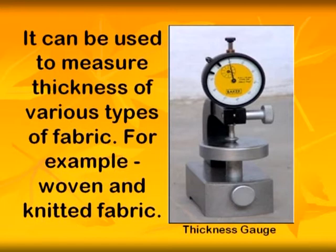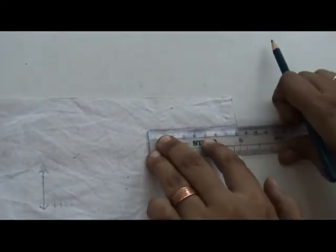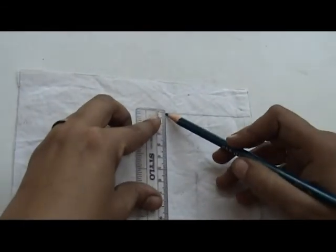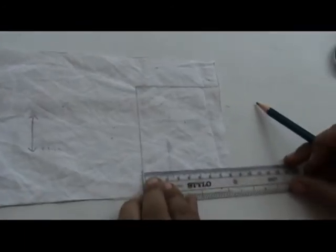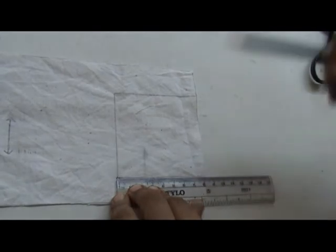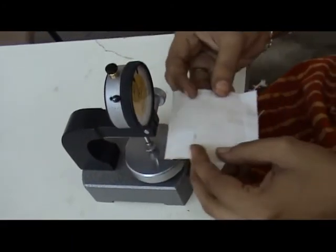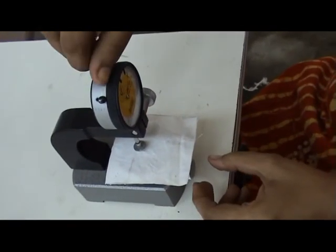A piece of the fabric is placed on the reference plate of the instrument, ensuring that there are no creases in the fabric. While placing the fabric, it should not be subjected to any stretching.